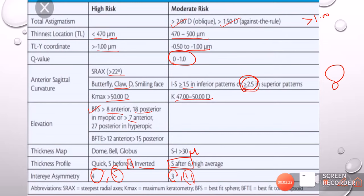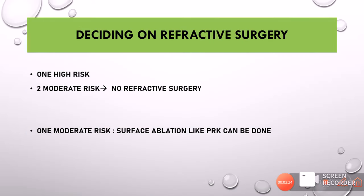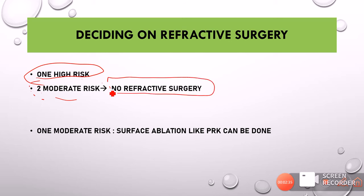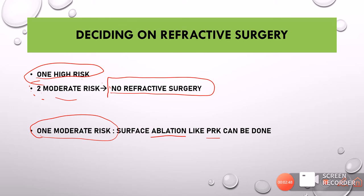Understanding these risks is important clinically: whenever there is even one high-risk finding or two moderate-risk findings on tomography, it is a contraindication for refractive surgery. If there is only one moderate risk present, surface ablation procedures like PRK can still be done, however LASIK cannot be done. This was a comprehensive video on corneal topography and tomography. If you stayed till the end, congratulations — I hope it was useful. Thank you and have a nice day.